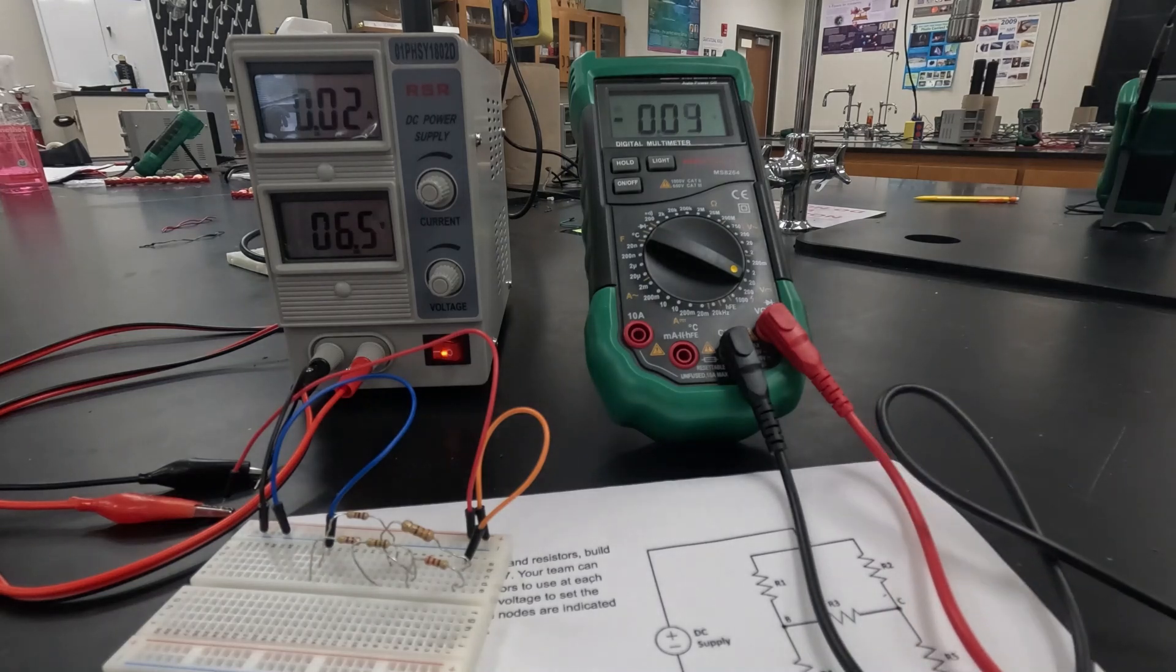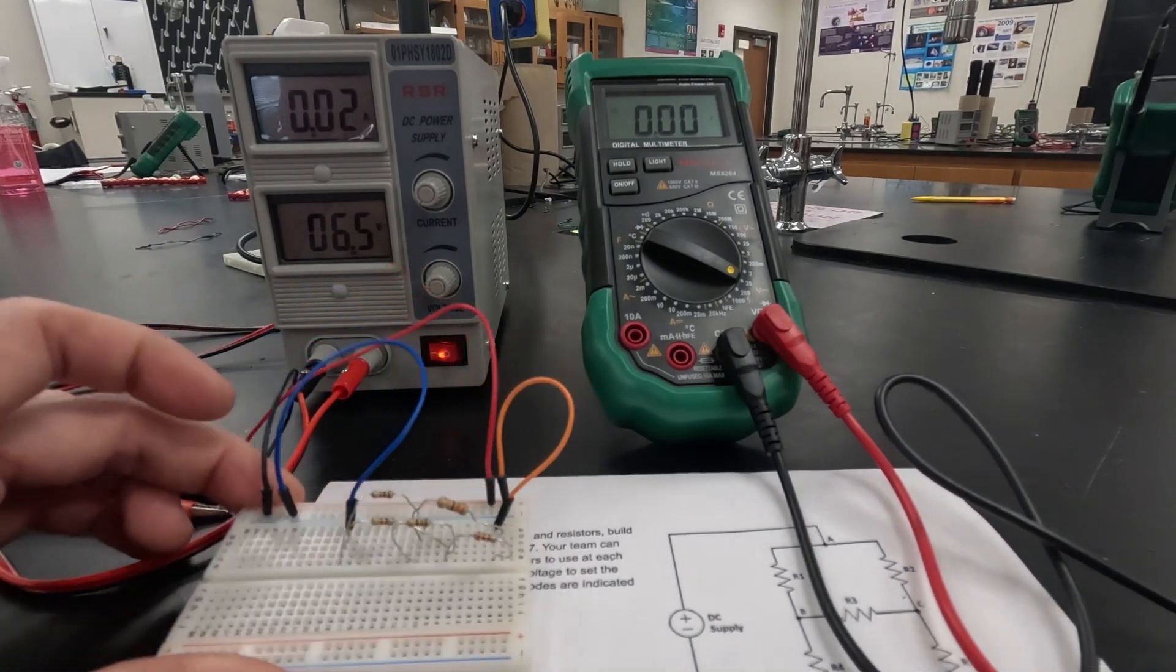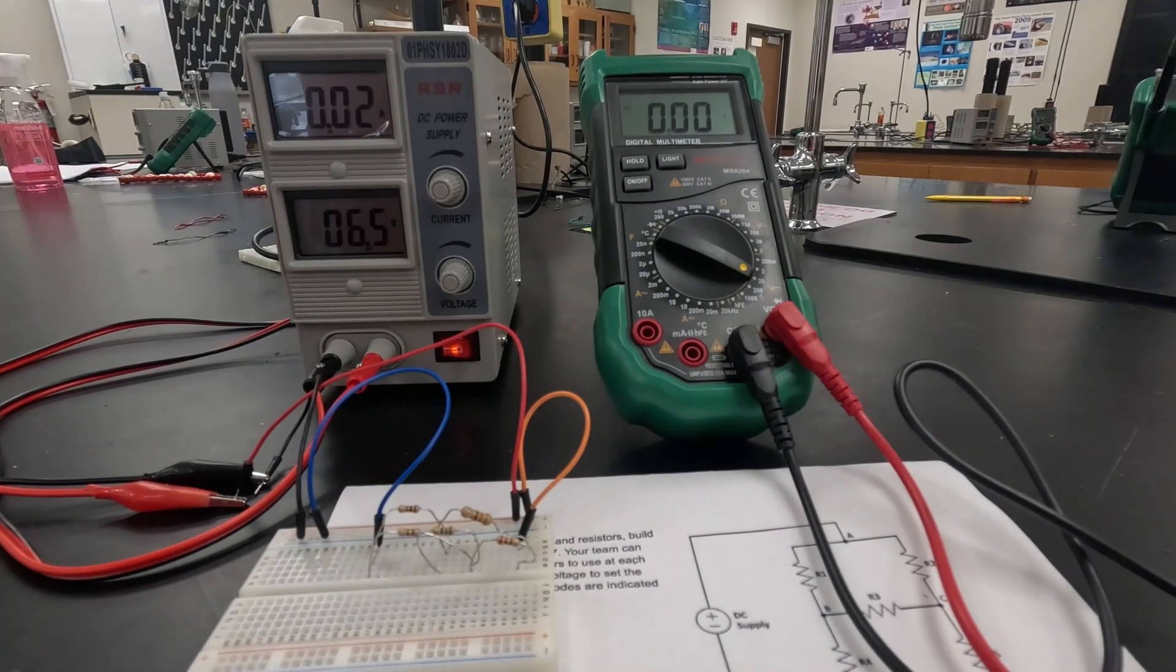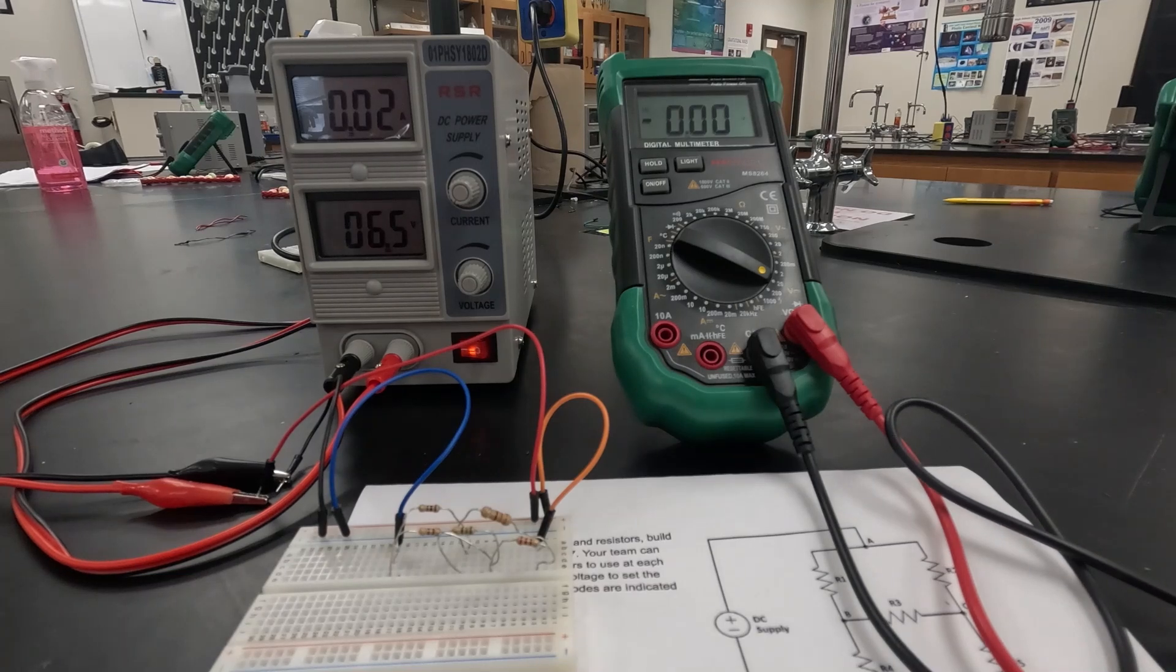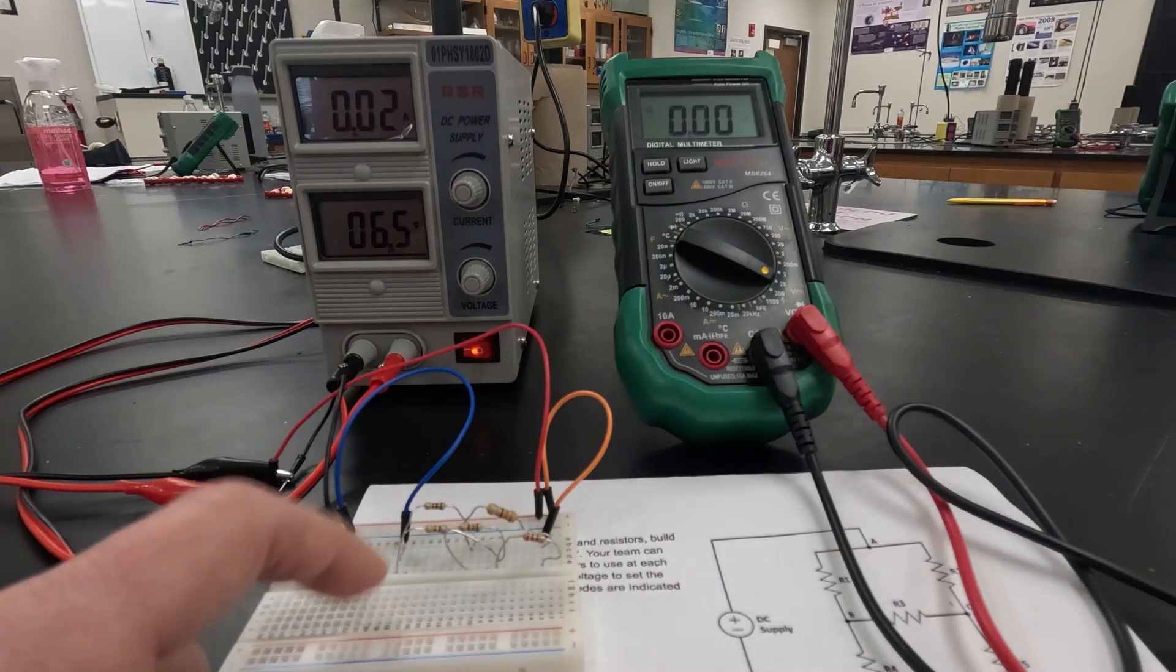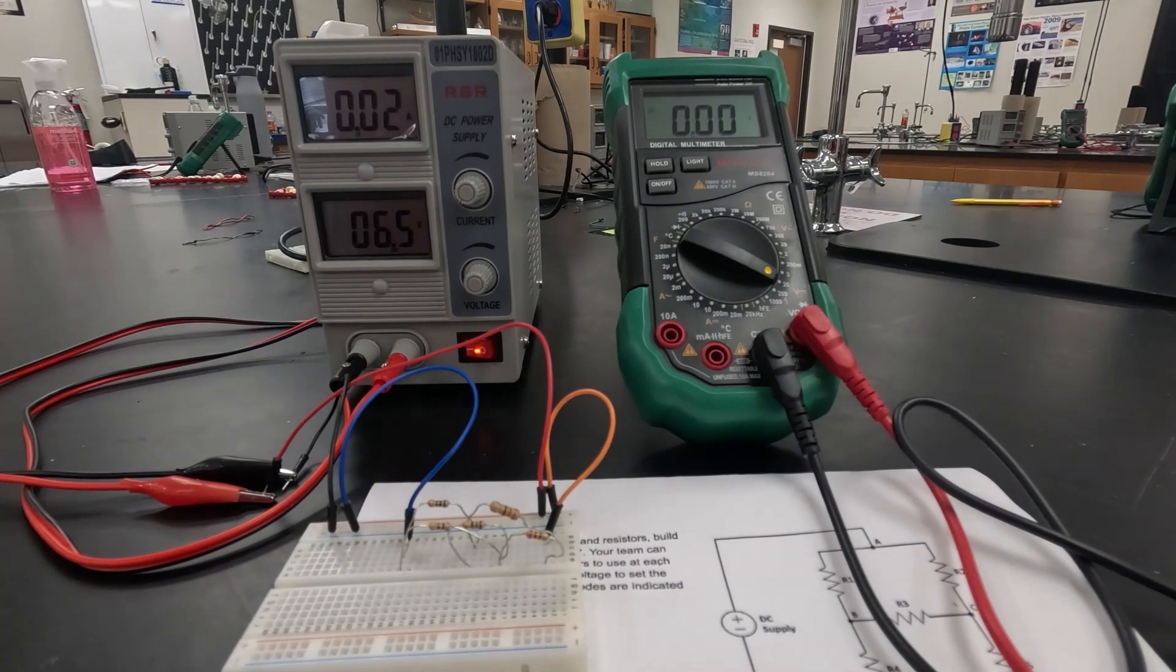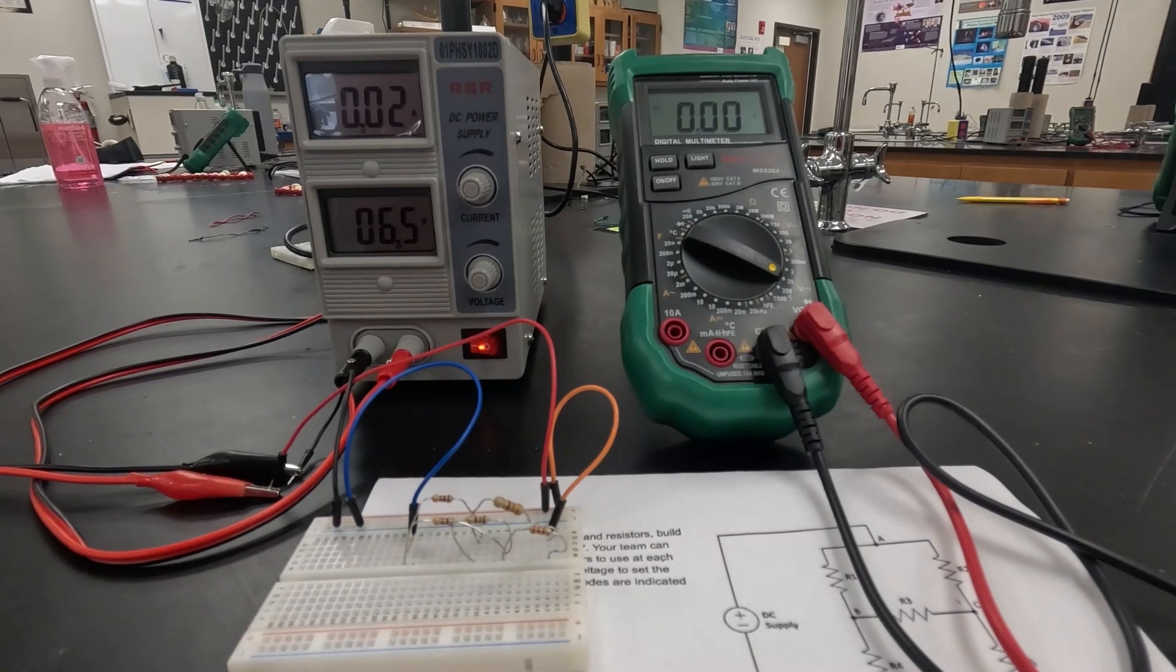So that's each one of your voltages for this complex circuit we have on 3.1.5 for Kirchhoff's law lab. From there you should be able to calculate your current using Ohm's law since we know our resistors, we know the voltage across each one, and we know our total resistance in the circuit and our total voltage. Hopefully that helps get you rolling. If you have questions let us know.